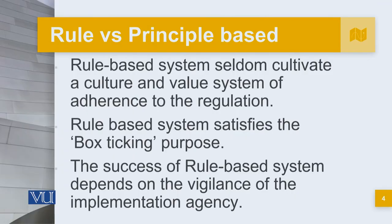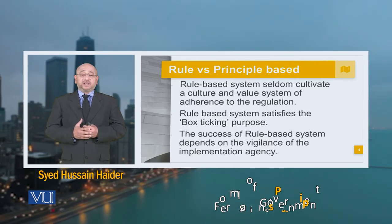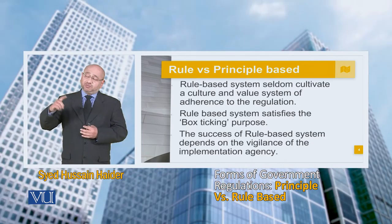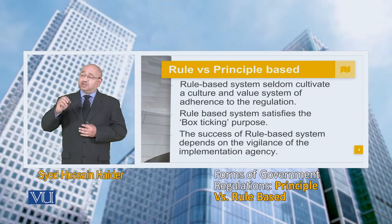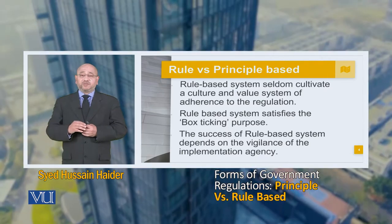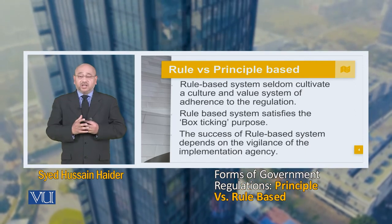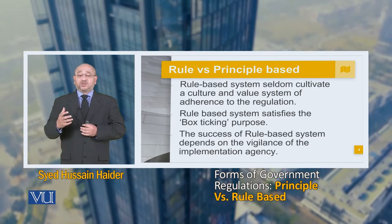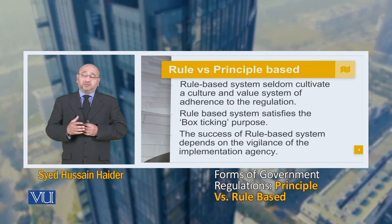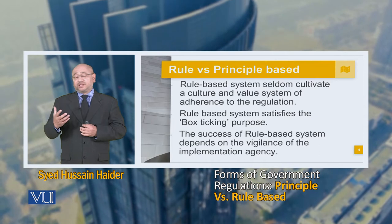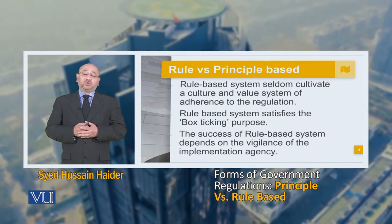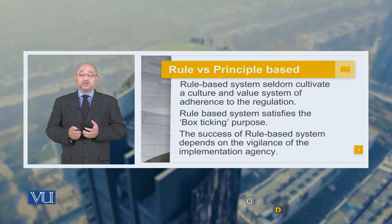If you look at the rule-based system, it seldom cultivates a culture and value system of adherence to the regulation, because those rules are stringent. That culture is not developed within the organization or within the stakeholders. Simply stated, the rule-based system basically specifies and satisfies the tick-the-box purpose — first thing has been done, second thing has been checked, third thing has been checked. Therefore, it is basically a checking system — very straight-jacketed and very silo-based. The success of a rule-based system depends on the vigilance of implementation, and based upon that vigilance, standard operating procedures are followed exactly by the stakeholders or individuals related to that particular agency or institution.